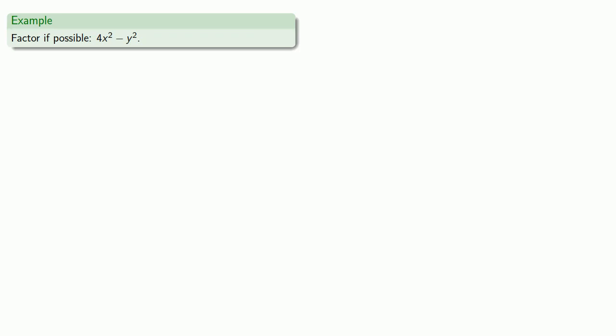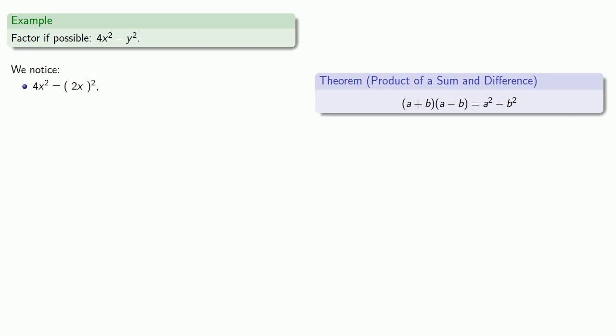For example, let's try to factor 25x² - 16. We notice our first term, 25x², is a square of 5x. And our second term, 16, well that's the square of 4.